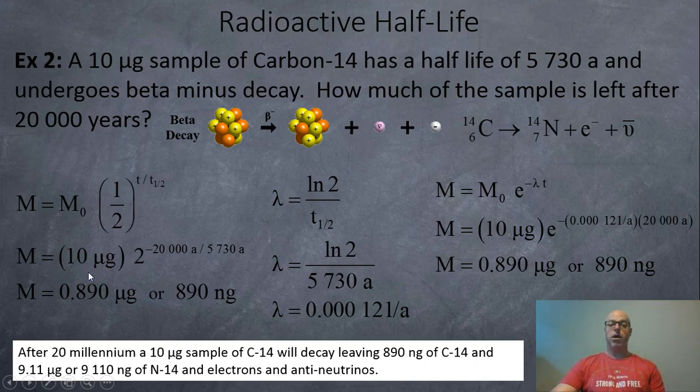So we have 10 microgram sample, that's what we have, and minus 20,000 years divided by the 5,730. So after 20,000 years the 10 microgram sample will decay all the way down to 0.89 micrograms or 890 nanograms.